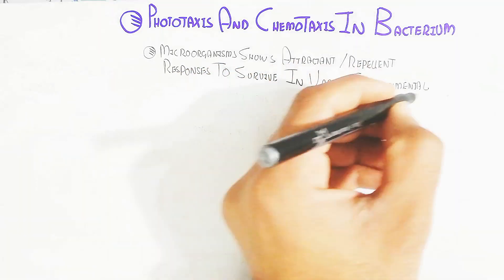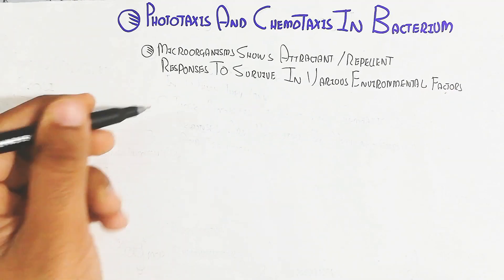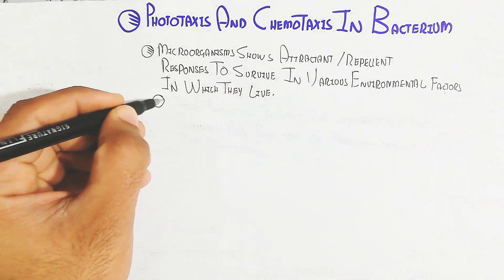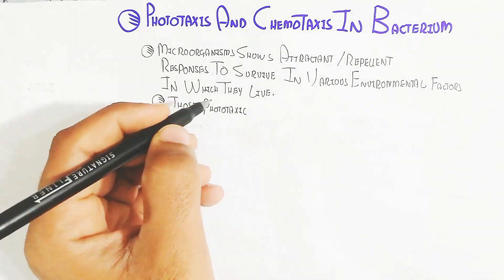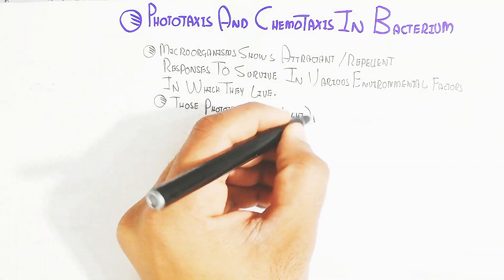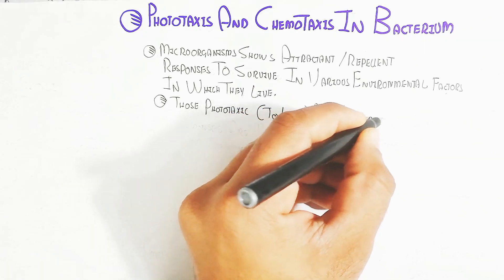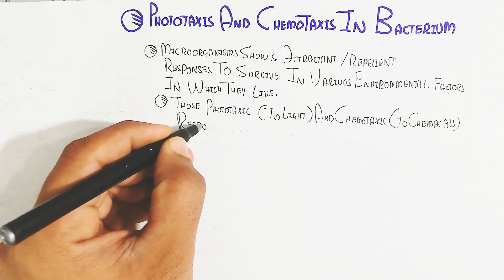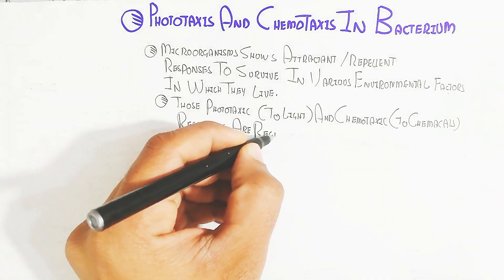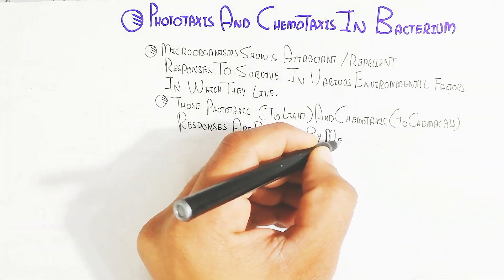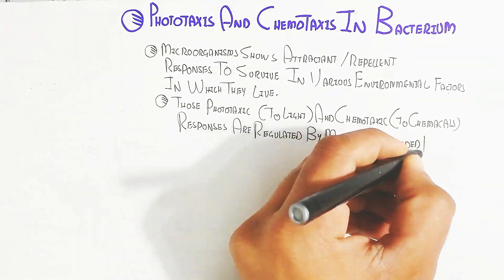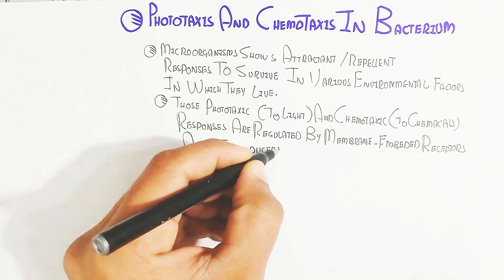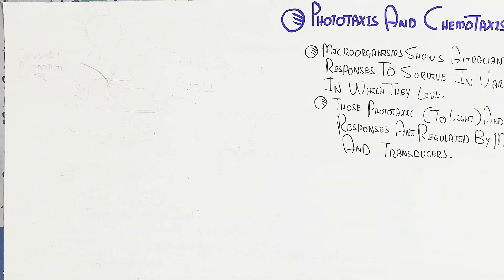Bacteria survive in various environmental factors. Phototaxis refers to responses to light, and chemotaxis to chemical responses. These are regulated by membrane-embedded receptors and transducers. The membrane-embedded receptor receives a ligand — a chemical or light — and the transducer will transduce that signal.